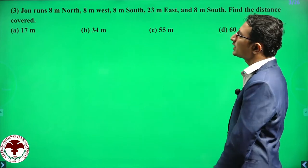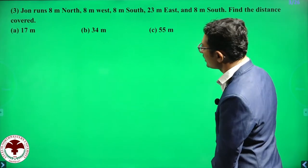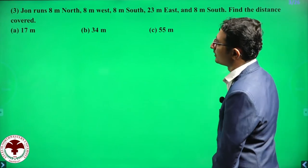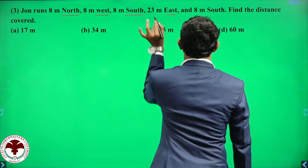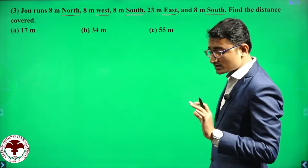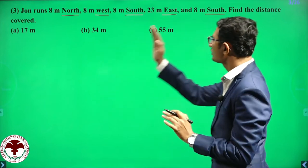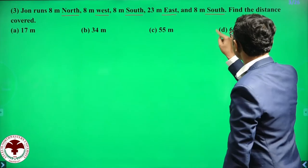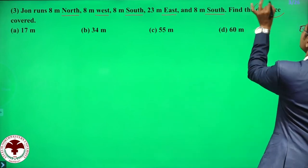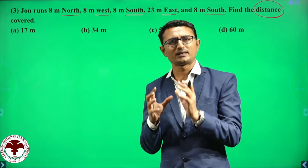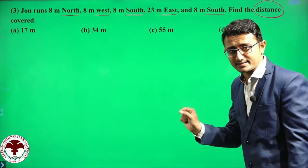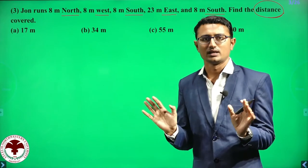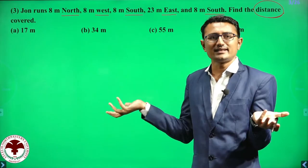Now we move to the third question. John runs 8 meter north, 8 meter west, 8 meter south, 23 meter east, and 8 meter south. Find the distance covered. When you see the word 'distance,' remember from kinematics in class 11 that direction does not matter for distance.